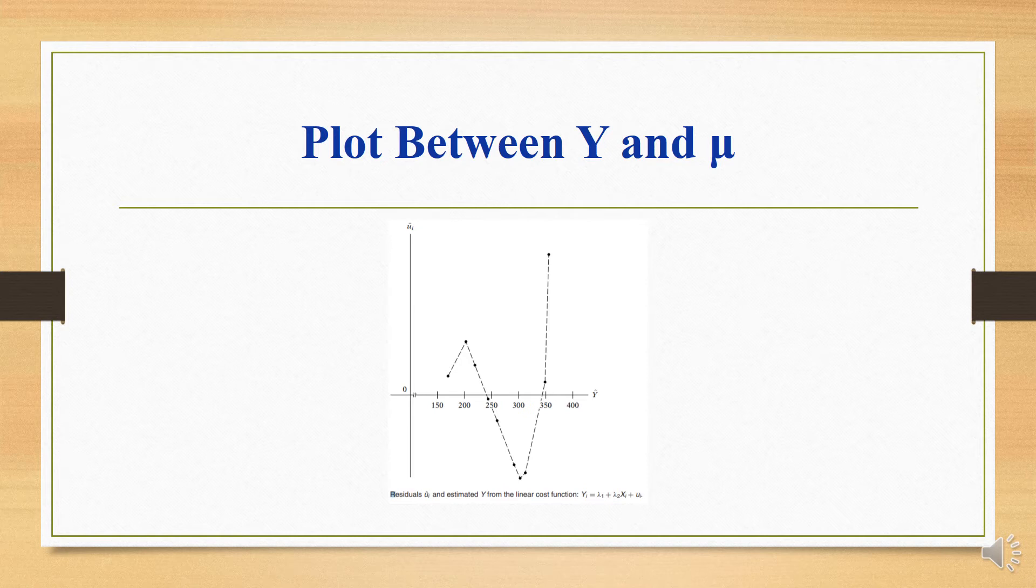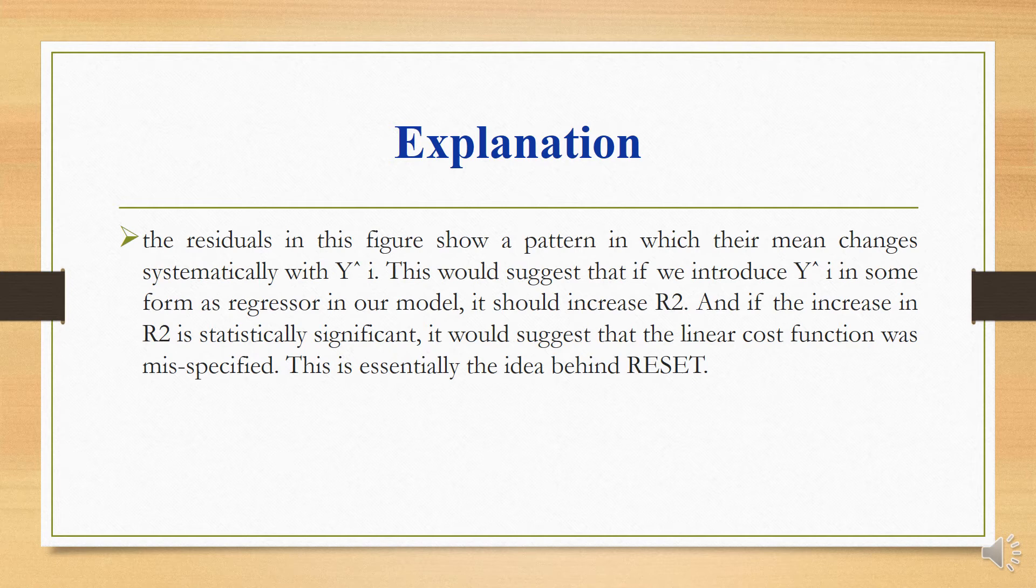Look at the picture. This is the plot between y hat and mu hat, the error term. On the vertical axis we take mu hat and on the x-axis we take y hat. The residuals in this figure show a pattern in which their mean changes systematically with y hat i. This would suggest that if we introduce y hat i in some form as a regressor in our model, it should increase R squared. And if the increase in R squared is statistically significant, it would suggest that the linear cost function was misspecified. This is essentially the idea behind RESET.